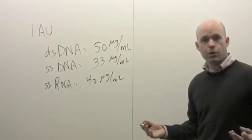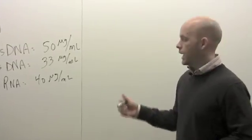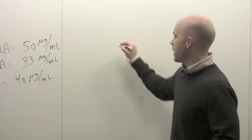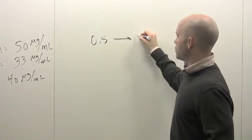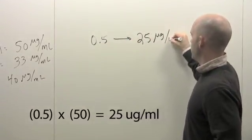And so for instance, if you're working with double-stranded DNA and your absorbance reading is 0.5, that would tell you that your DNA concentration is 25 micrograms per mil.